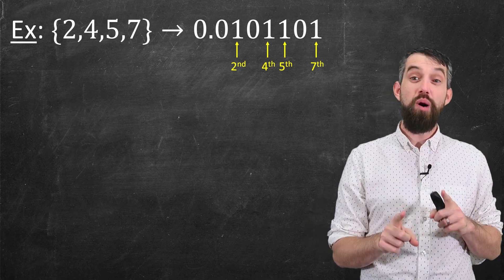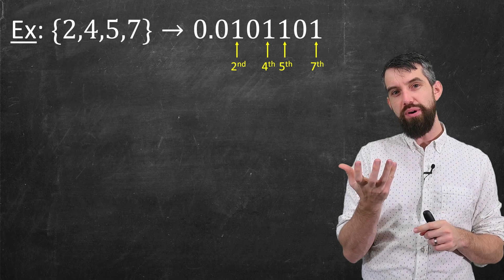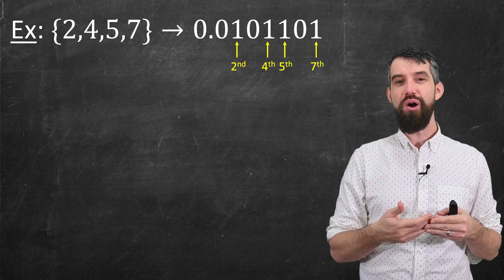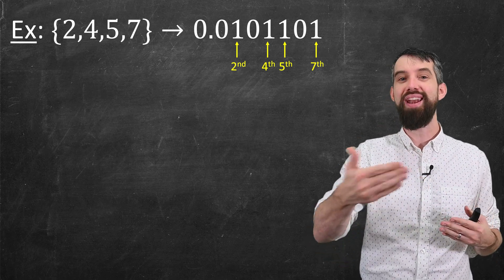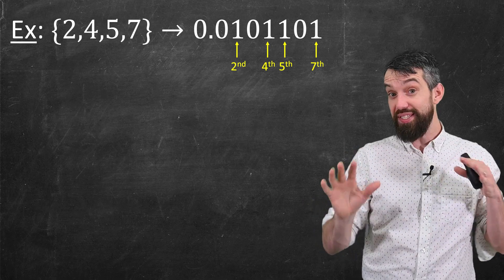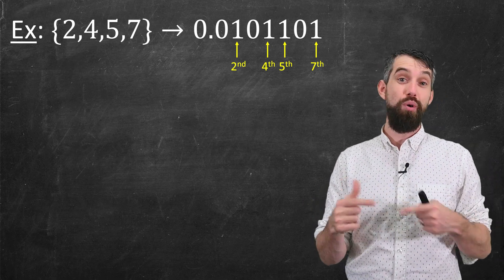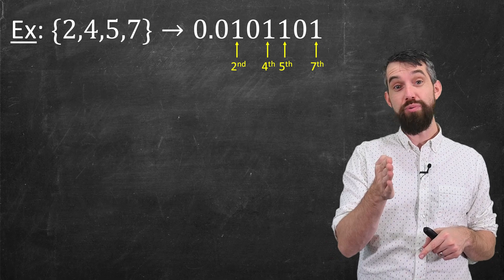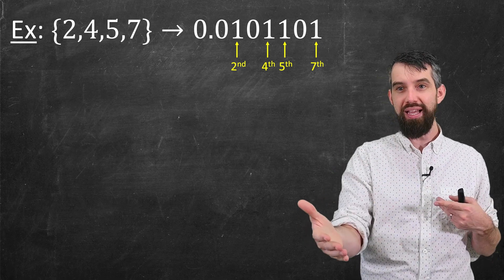Very small caveat here. Binary numbers are not unique. It's kind of like how in decimal 0.9999, infinitely repeated, and one are the same thing. Similarly, at any point in binary, if you end with a one, you could replace that with zero, one, one, one, one, one, infinitely repeated,